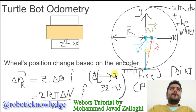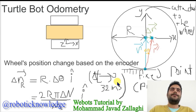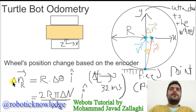For a tiny time step — in our case for robot simulation 32 milliseconds — we can say that the change in position of the center of the wheel is equal to what we call delta R here for the right wheel.